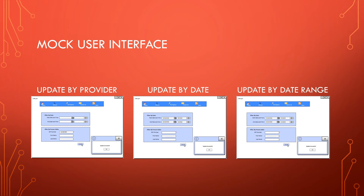Our user interface will allow three different criteria for updates. You can update by the provider's master person index number, first name, last name, and date of birth. Or you can update for a particular date, or you can also select a range of dates for updating.